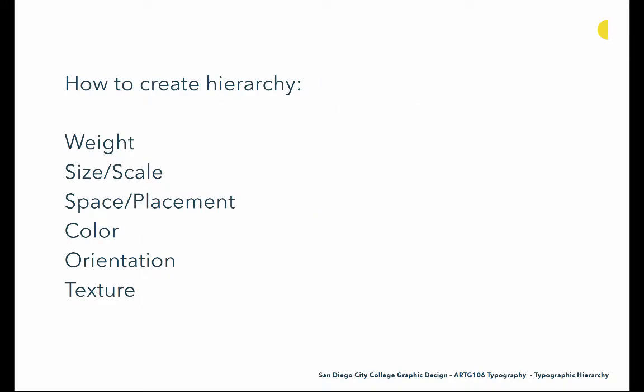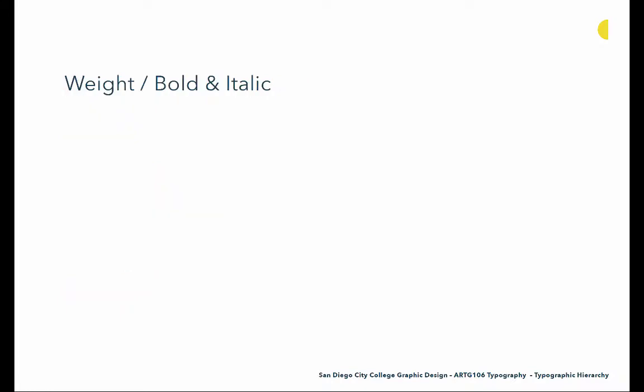How can we create visual hierarchy? There are a lot of ways and sometimes these things get combined together. But the general six are: weight, size and scale, space and placement, color, orientation, and texture. Let's look at each of these individually.